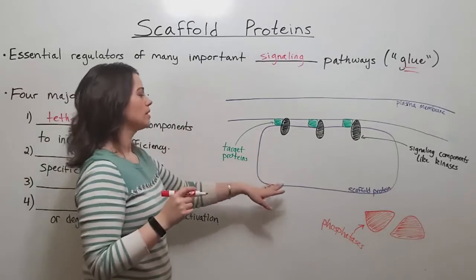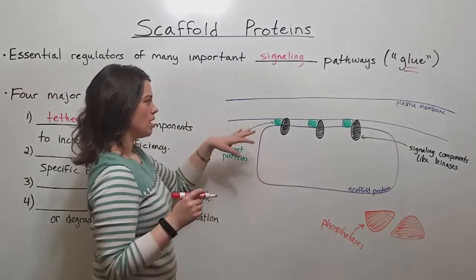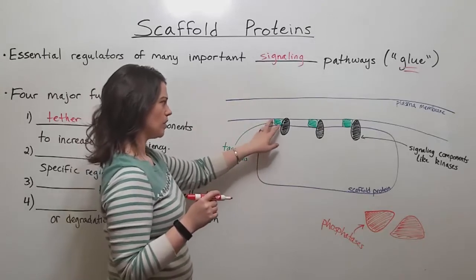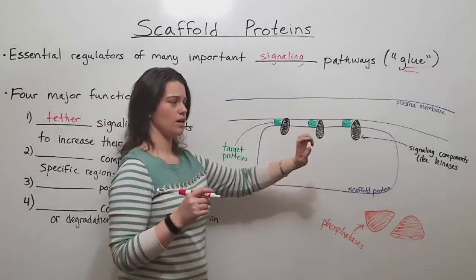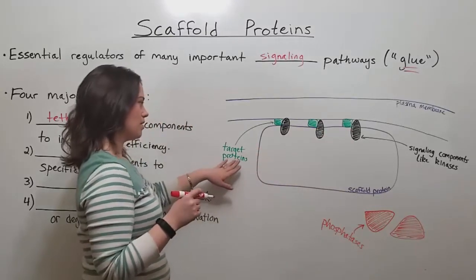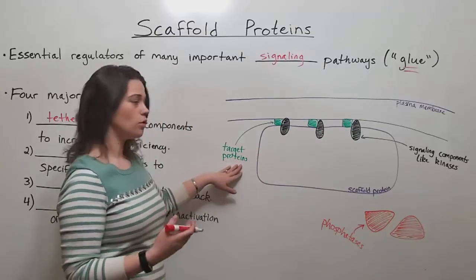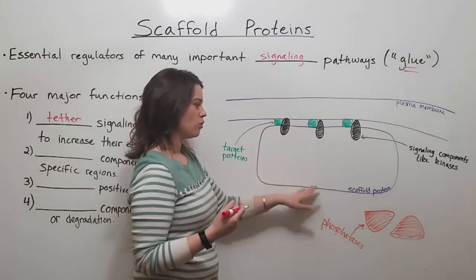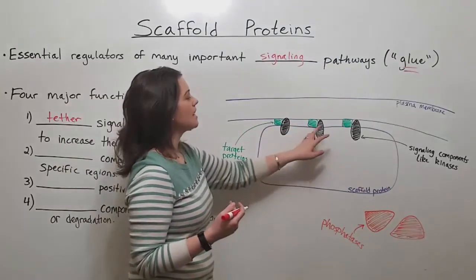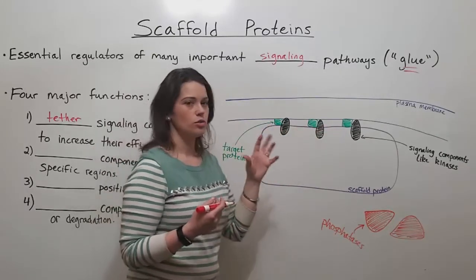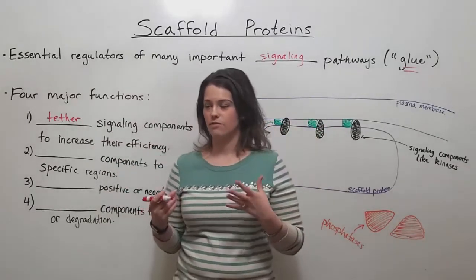We have an example here: scaffold protein in purple, plasma membrane in blue, and a few different types of proteins. Some signaling components like kinases in black, the proteins they are phosphorylating—their targets—in green. What you can see is that the scaffold protein can tether certain things together to increase their efficiency.